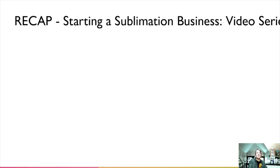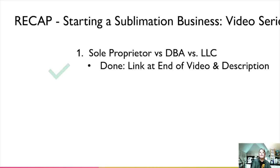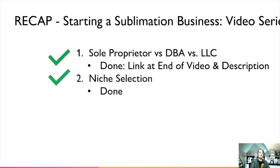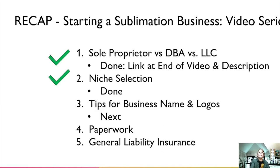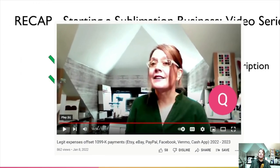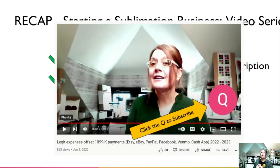Let's recap the starting a sublimation video series. Video one was about sole proprietorship versus DBA versus LLC — it's done and will be linked at the end and in the description. This video, number two — niche selection — you just watched it. The next video in this series is tips for business names and logos. Video four is all about paperwork, and finally video five is about general liability insurance. Make sure you click to subscribe.